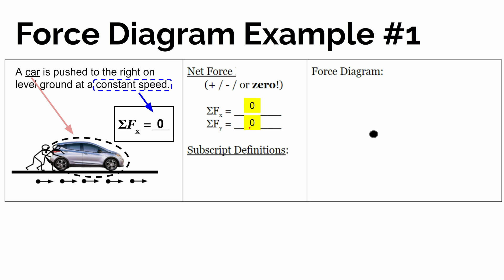So now let's start drawing the forces on this dot, which represents the car. Before we draw the force diagram and the arrows, we're going to define what different letters mean, which represent the objects involved. So C will represent the car, P will represent people, G will represent the ground, and E will represent the earth.